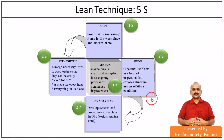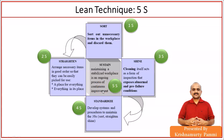Third S — Shine: the act of cleaning, making everything look nice, which itself exposes abnormal and pre-failure conditions. Fourth S — Standardize: develop systems and procedures to maintain the Sort, Straighten, and Shine states. Come up with checklists — for example, books arranged alphabetically with tags, top row covering A to E. Fifth S — Sustain: maintain a stabilized workplace as an ongoing process of continuous improvement.